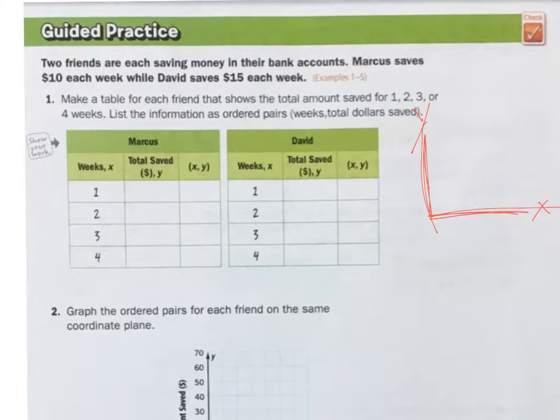But we've got to figure out what the X and Y is. Let's look at number one here. This is the guided practice, so you can follow along in your book. Make a table for each friend that shows the total amount saved for 1, 2, 3, or 4 weeks. List the information as ordered pairs. We have two friends. We have Marcus saving $10 a week, while David saves $15 a week.